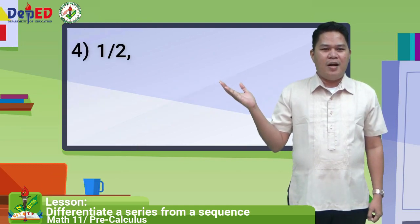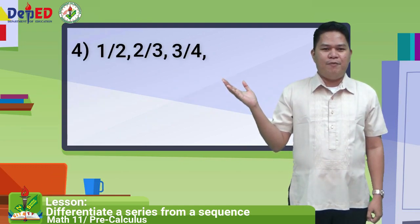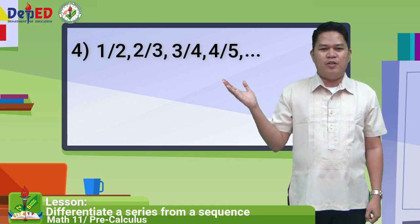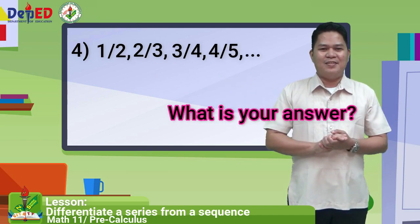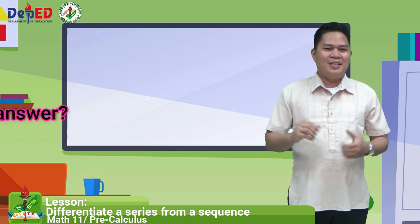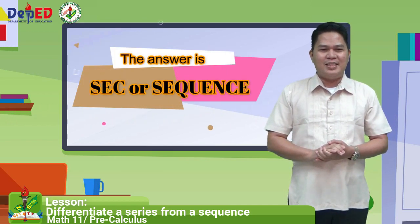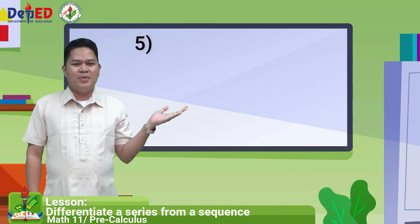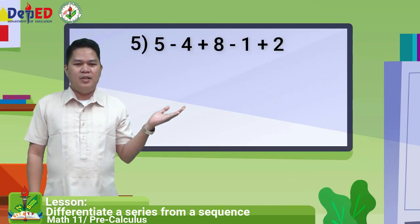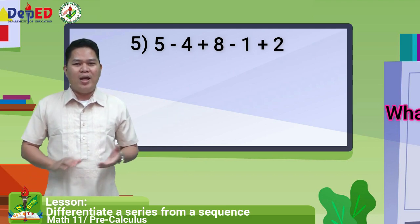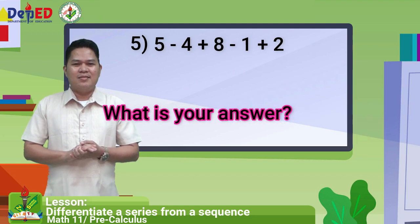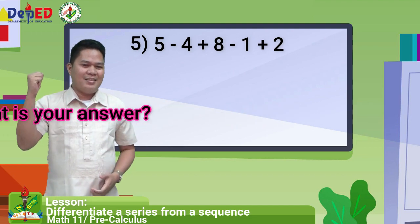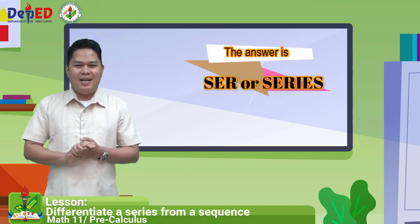Number four: one half, two thirds, three fourths, four fifths, followed by three dots. The answer is SEQ or sequence. Number five: five minus four plus eight minus one plus two. The answer is SER or series.